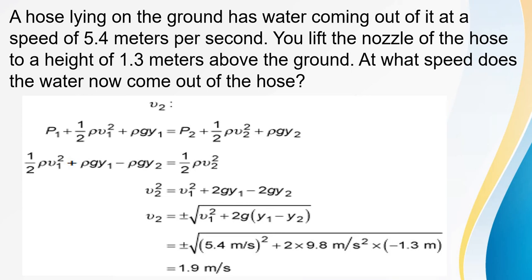Since the hose is open to atmosphere, p₁ = p₂ cancels. We get v₂² = v₁² + 2g(y₁ − y₂). With v₁ = 5.4 m/s and y₁ − y₂ = −1.3 m (nozzle raised), substituting: v₂ = root of (5.4² + 2 × 9.8 × (−1.3)), which gives 1.9 meter per second.